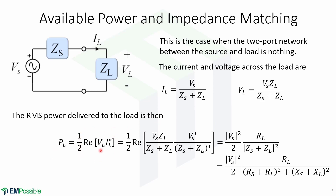We can substitute Vl and Il with these expressions and put them in here, then simplify the expression, and then recall that Zs and Zl can be written in terms of real and imaginary components. We then arrive at this expression.